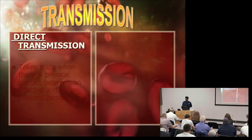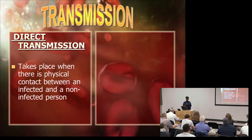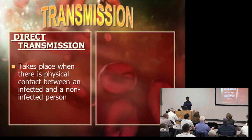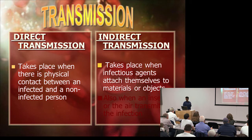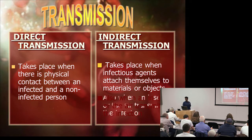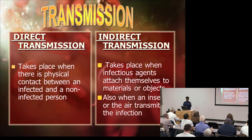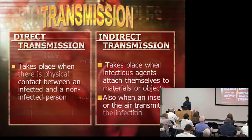Let's talk about transmission — how is it transmitted? There are two ways: direct and indirect. Direct transmission takes place when there's physical contact between an infected and a non-infected person. Indirect transmission takes place when infectious agents attach themselves to materials or objects, or when an insect or the air transmits the infection.